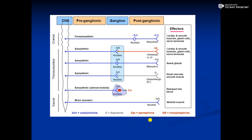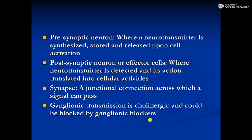We can see the effect of different neurotransmitters on different regions. In postganglionic transmission, acetylcholine, norepinephrine, and dopamine act on particular organs — cardiac and smooth muscle, sweat glands, nerve terminals, renal vascular smooth muscle, and blood vessels. Before going into detail about the effects of different neurotransmitters, we need to understand certain terms commonly used in the autonomic nervous system.